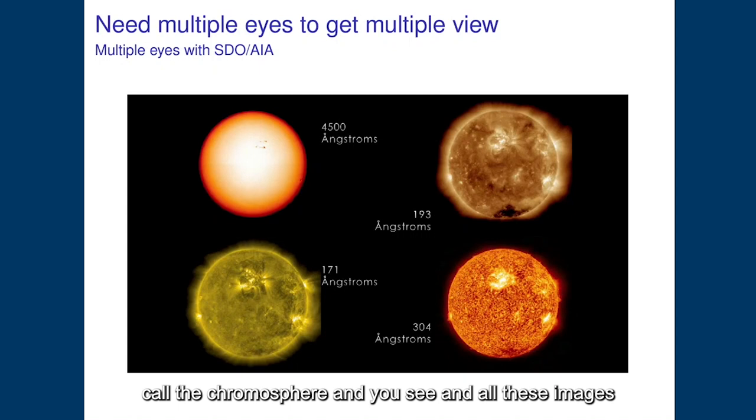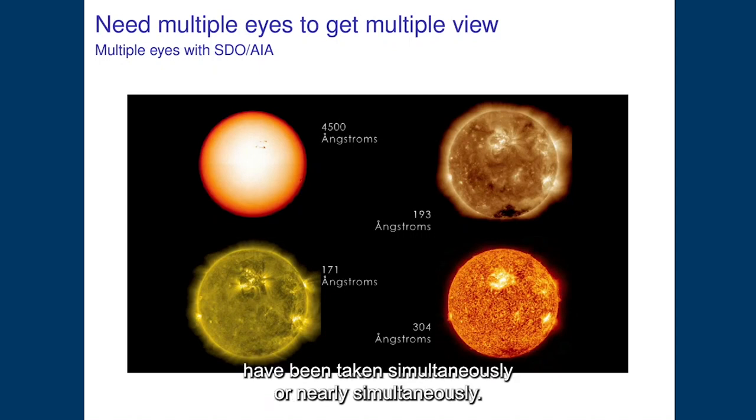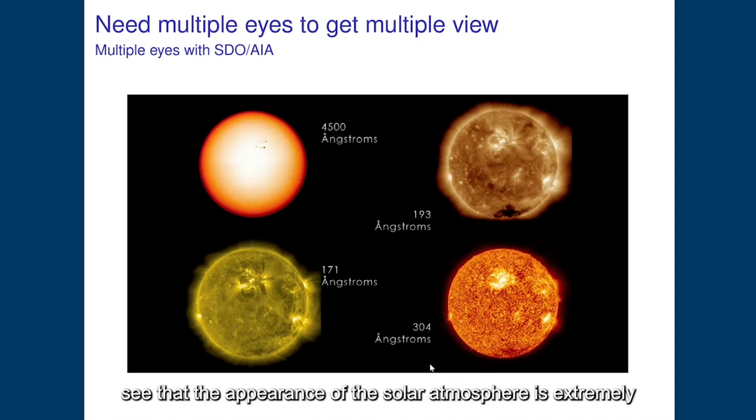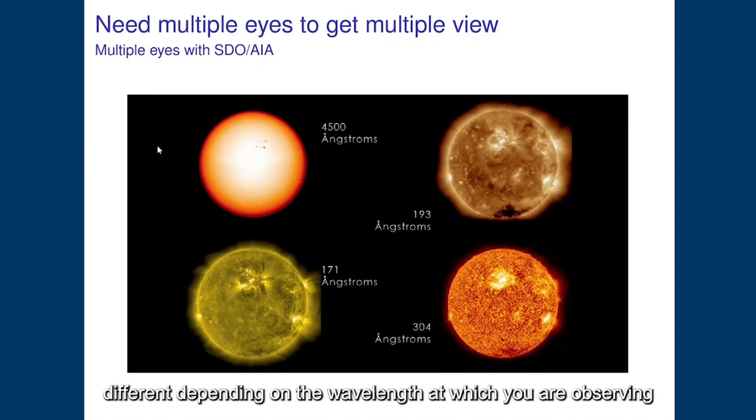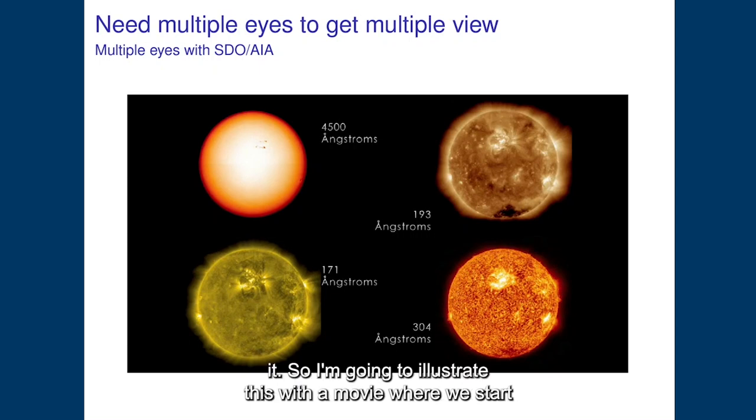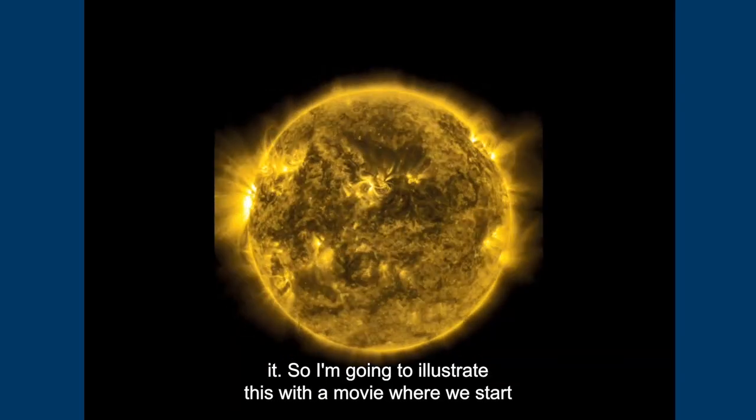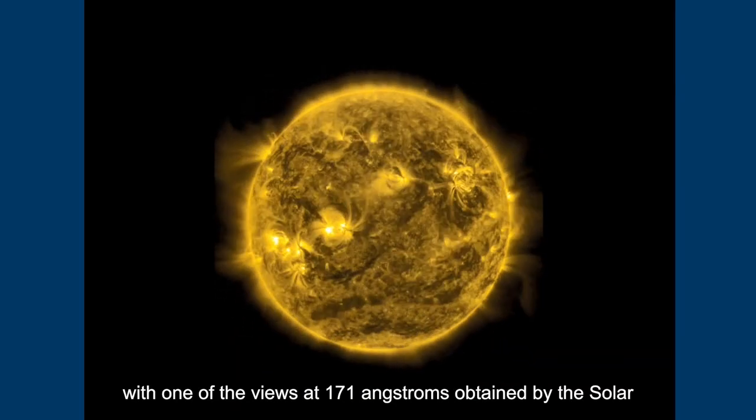And all these images have been taken simultaneously or near simultaneously by the same telescope but at different wavelengths. And you see that the appearance of the solar atmosphere is extremely different depending on the wavelengths at which you are observing it.